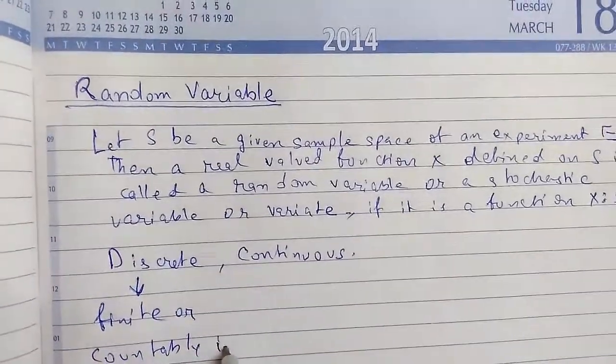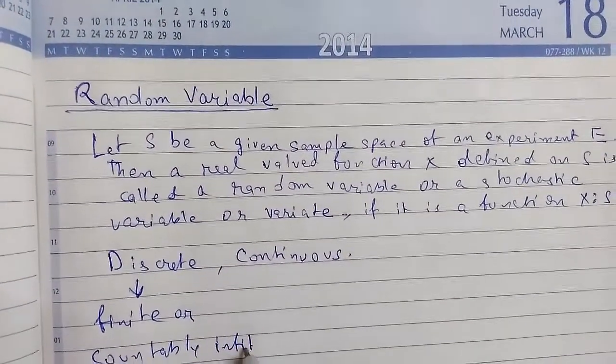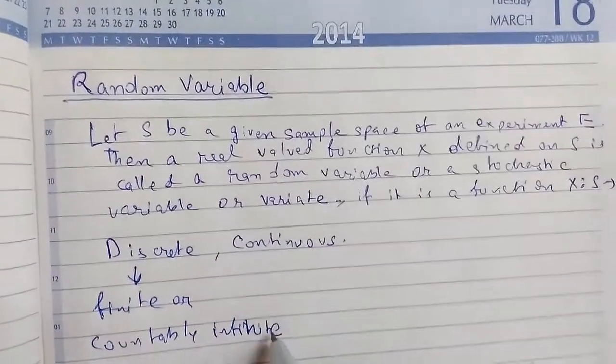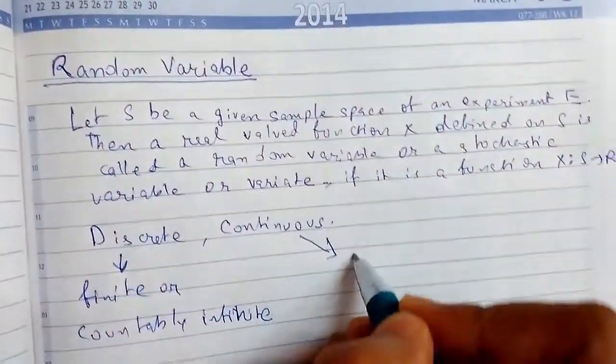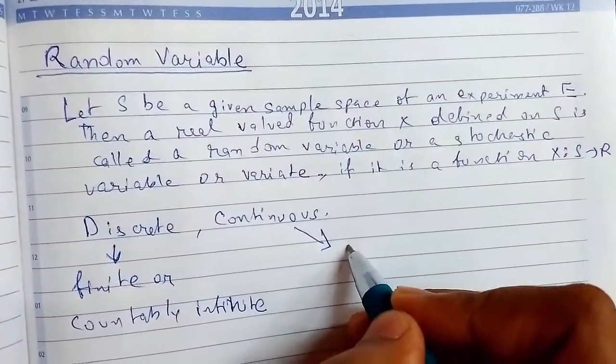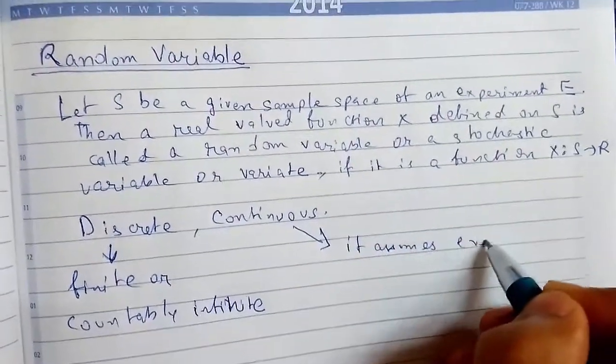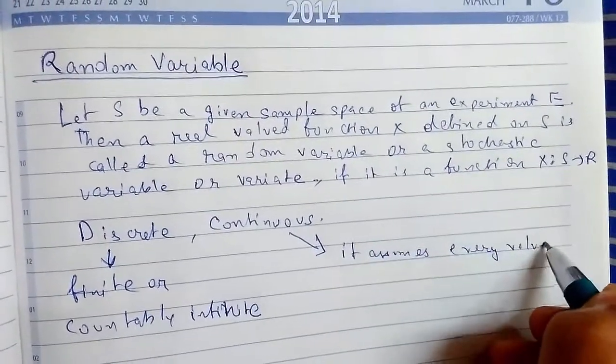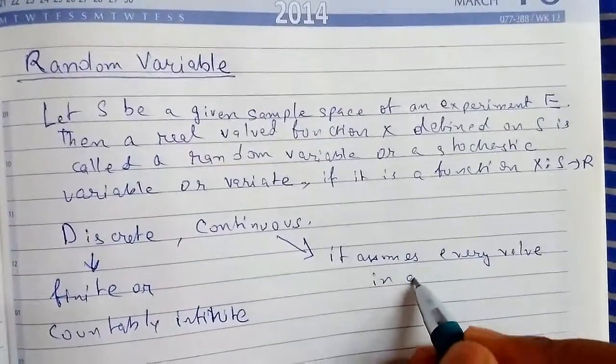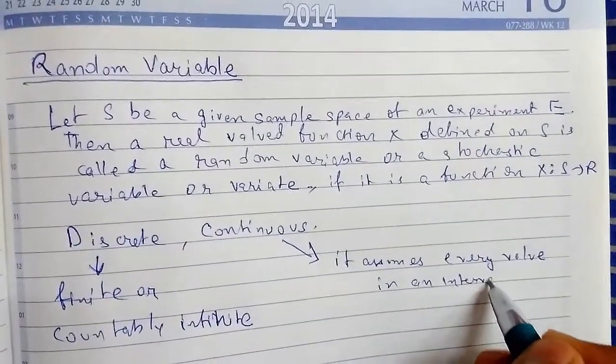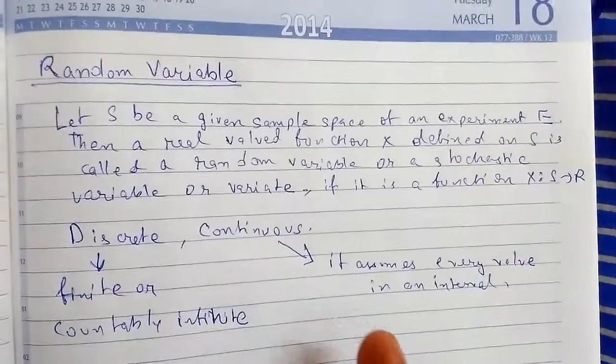I will explain when we do problems on this. And for continuous, we can say that it is continuous if it assumes every value in an interval. So I hope you know the difference between discrete and continuous.